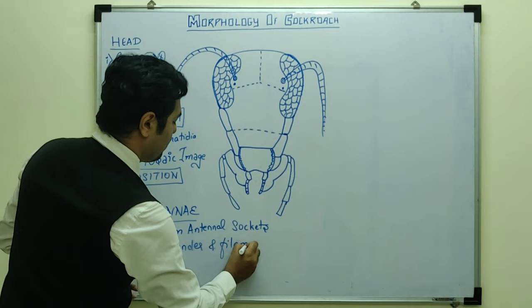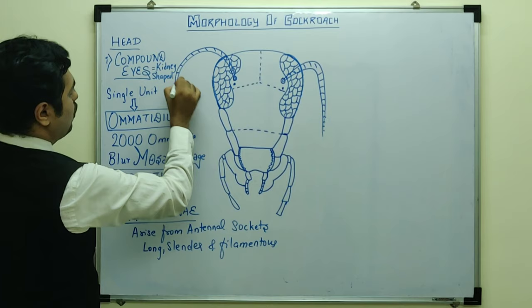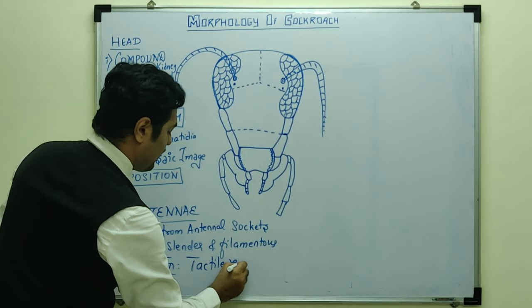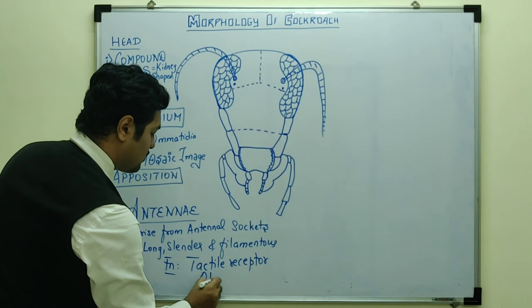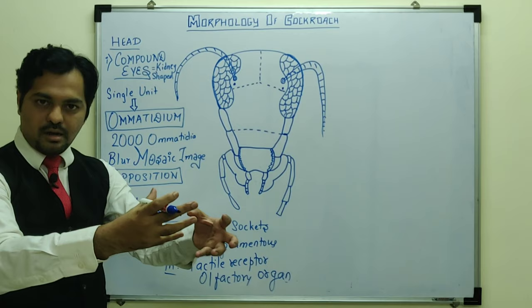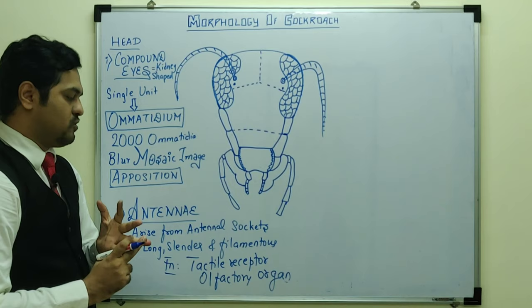The antennae have filament-like structures. Their major function is that they act as tactile receptors — detecting touch sensation. They also act as olfactory structures, meaning they help in the sense of smell. So nearby food in the vicinity can be detected by smell. Compound eyes help with vision, while antennae serve as tactile receptors and olfactory organs.